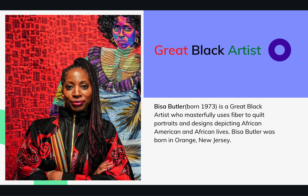We're going to also look at the work of another great Black artist today. Her name is Bisa Butler. Bisa Butler is a great Black artist who masterfully uses quilt and fiber to quilt portraits and designs depicting African American and African lives. Bisa Butler was born in Orange, New Jersey. She uses historical photographs as well as photos of her own family. She enlarges photos — larger than life size or about life size — and then sketches over these photos selecting areas of light and dark. Then she begins choosing fabrics, layering them according to color and lightness and darkness, and then stitching them together to create the figure with a sewing machine.